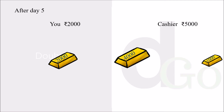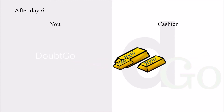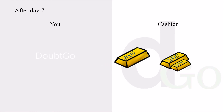After day six, you give the two thousand gold bar and take back the Rs.1000 gold bar. Now you have only Rs.1000 and the cashier has Rs.6000. After day seven, that is the last day, you give the Rs.1000 to the cashier and check out safely.